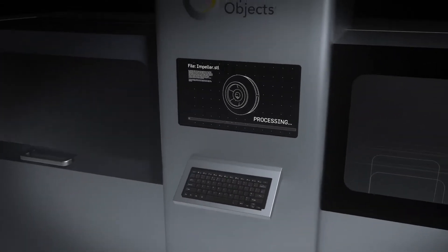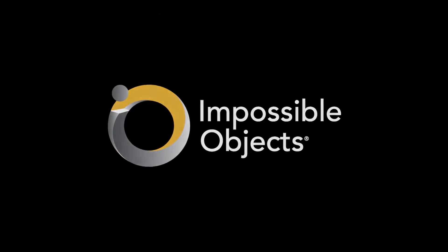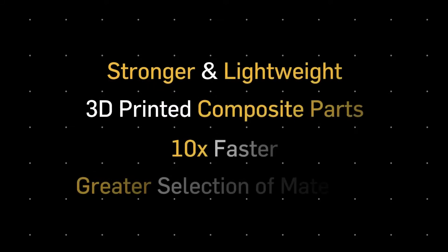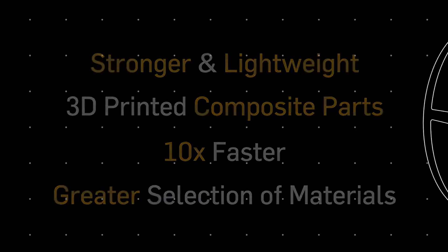Imagine producing complex carbon fiber and other composite parts at production speeds and volumes. Impossible Object's groundbreaking patented composite-based additive manufacturing technology, CBAM, produces strong, lightweight 3D composite parts that are printed up to 10 times faster and available in a wider selection of materials than conventional 3D printing.